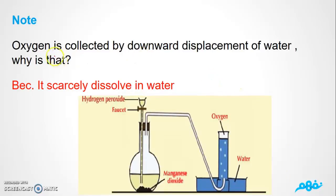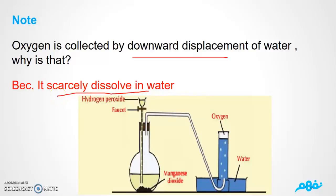We note that oxygen is collected by downward displacement of water. The oxygen cannot dissolve in water — oxygen gas scarcely dissolves in water. That is why the water goes down and the oxygen gas rises, collected by downward displacement of water.